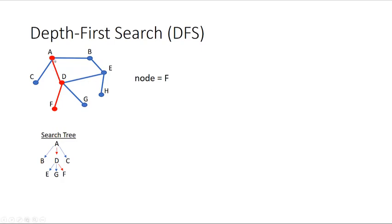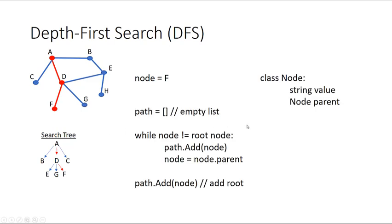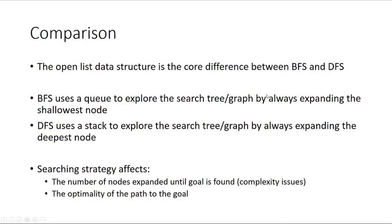We get the same path A, D, F through the search tree, and we repeat the same while loop of tracing back each node's parent to get the final path. These two algorithms were largely the same — we used pretty much the same set of commands for both. The difference was the data structure used for the open list: BFS used a first-in, first-out queue, and DFS used a stack. That affected how we popped off the open list and how we explored the state space, changing the order of nodes explored and how many iterations were needed.